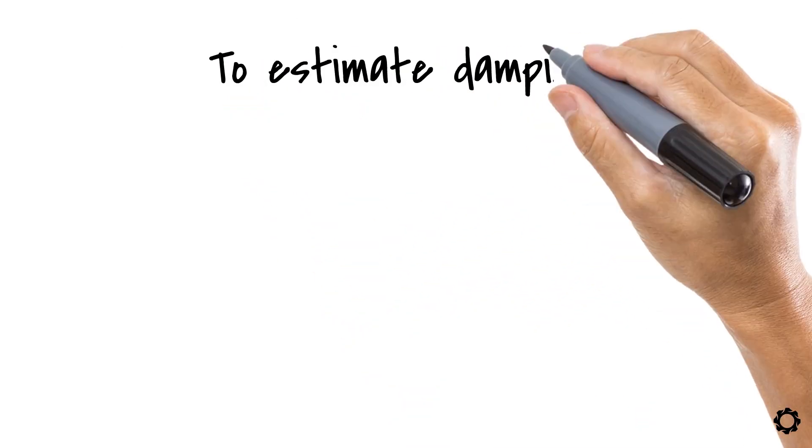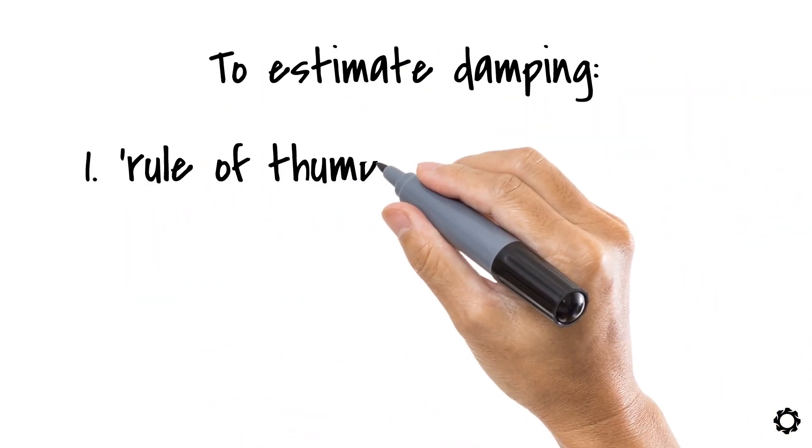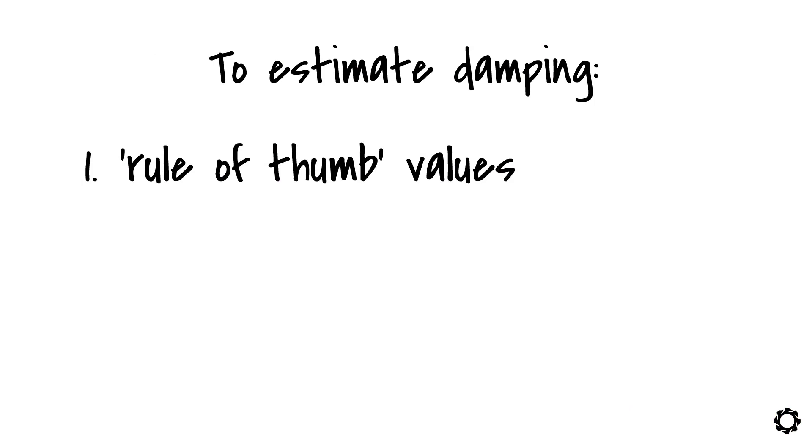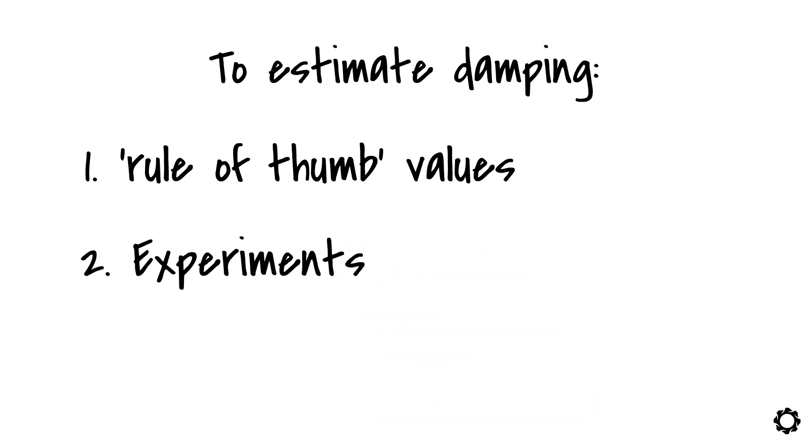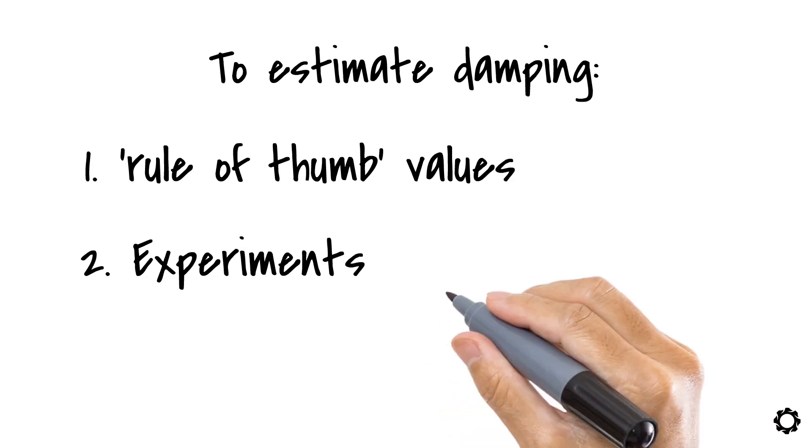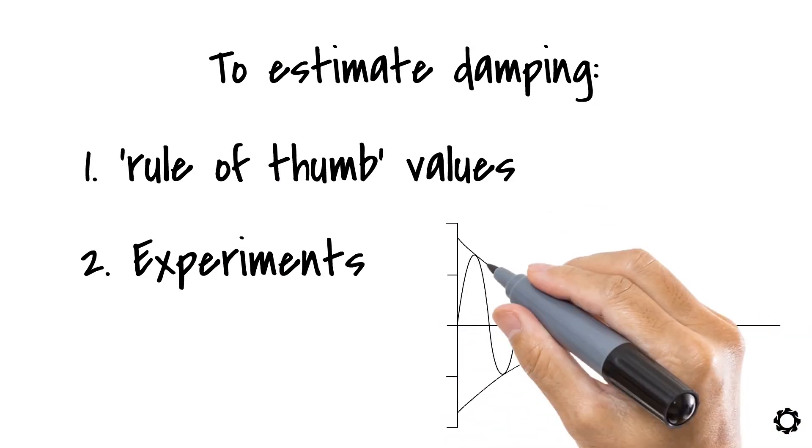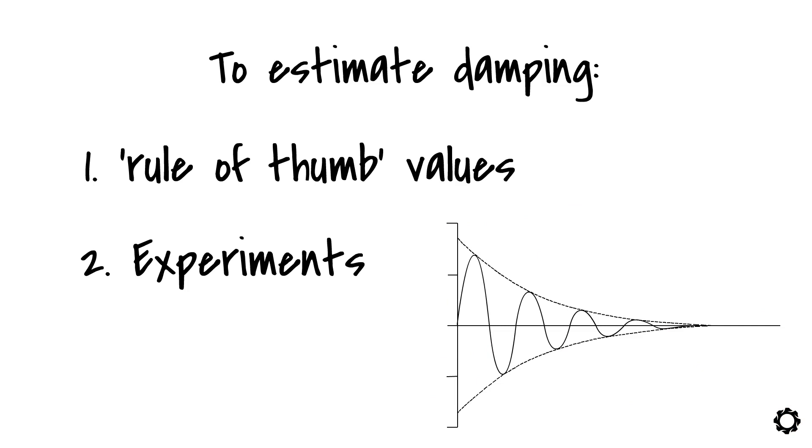We learned that to estimate damping we can either use the rule of thumb values for some specific cases or we could estimate this damping experimentally. In the latter case we learned about estimating damping using logarithmic decrement from the system response. So what's next?